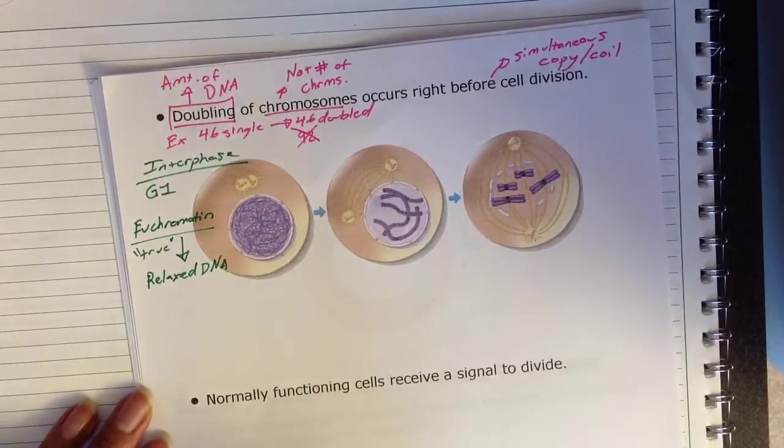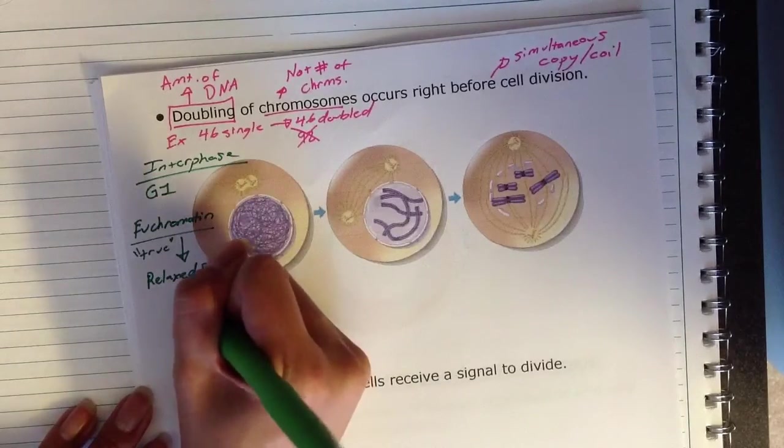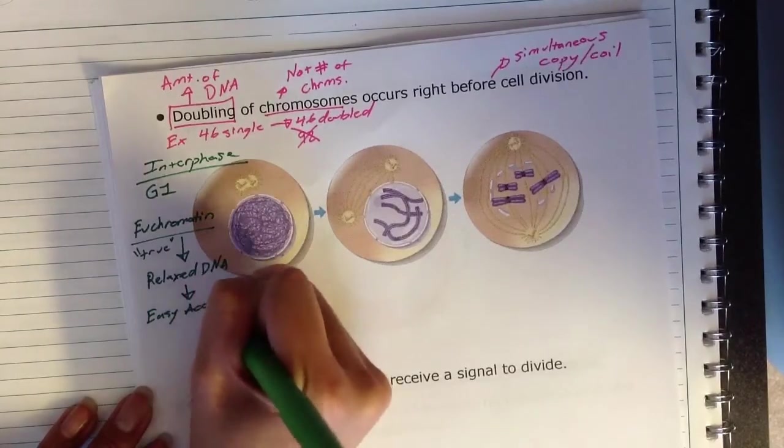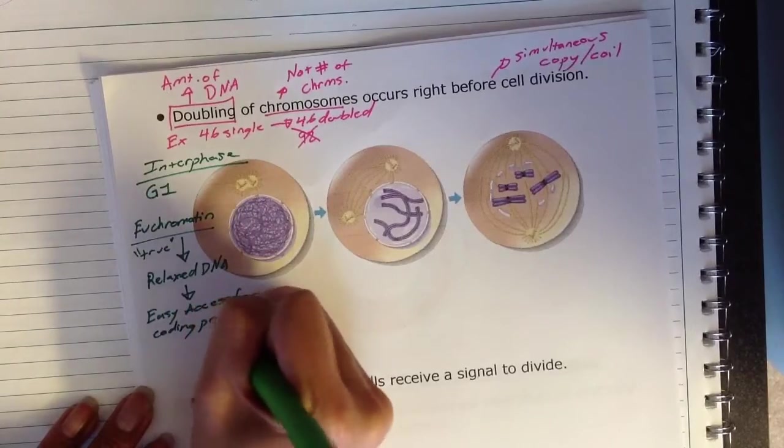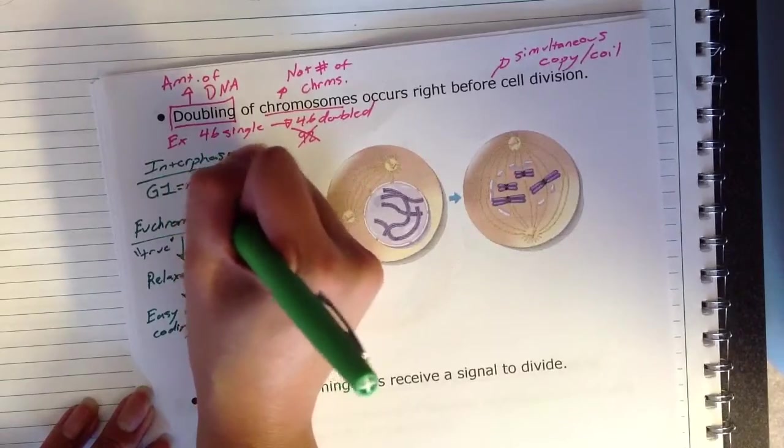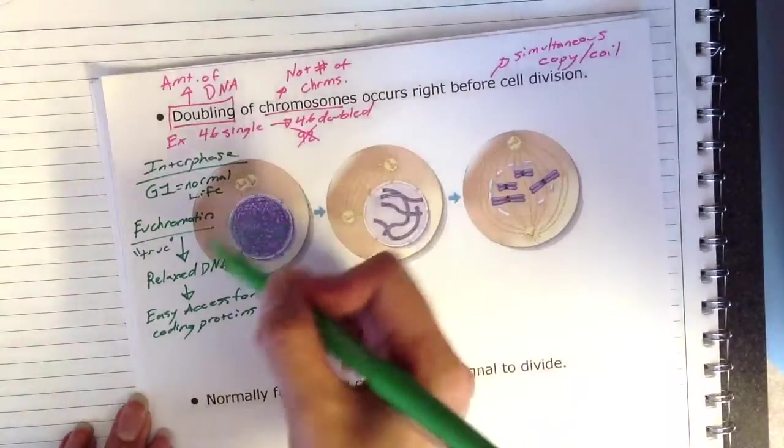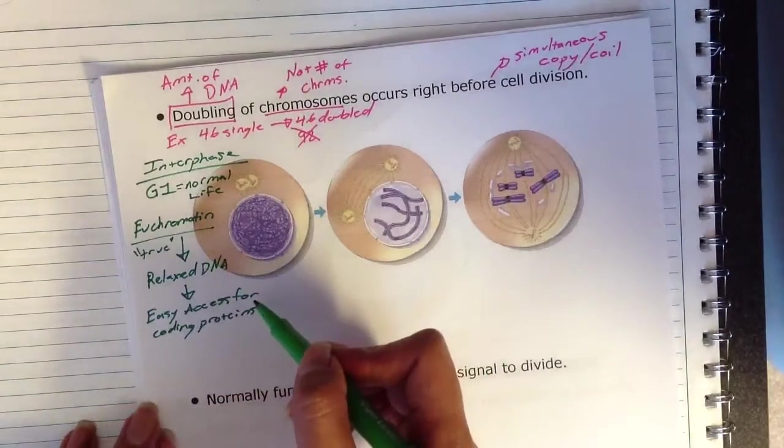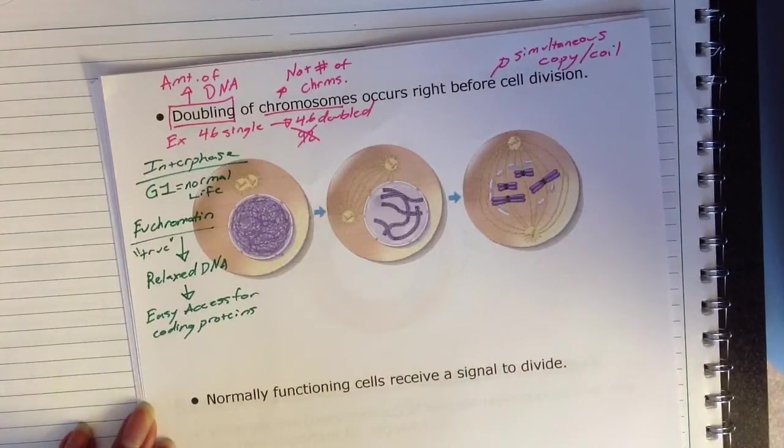So the DNA is still a double helix, but it's not bunched up in a chromosome. And when your DNA is relaxed, this is going to be easy access for coding proteins. So in the normal life phase of a cell, the DNA is relaxed. It's not coiled up as a chromosome. And this allows the proteins and enzymes to very easily access the code to make new proteins.